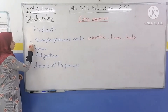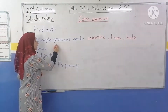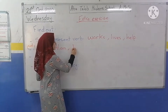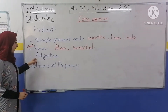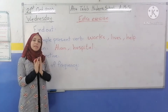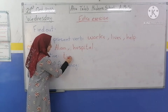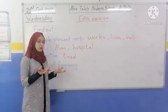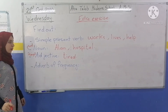Noun — اسم — a noun refers to a thing itself. Nouns from the text include: Alan and hospital. An adjective — صفة — describes the noun. For example: tired — متعب. When we say Alan gets very tired, tired describes Alan, so it is an adjective.